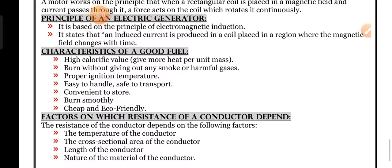Characteristics of a good fuel - what are the characteristics of good fuel they ask in your exam. First one: it has a high calorific value, gives more heat per unit mass. What do you mean by high calorific value? It gives more heat per unit mass, it's called calorific value. Second one: burn without giving out any smoke or harmful gases. What are the harmful gases? Carbon monoxide, carbon particles, sulfur dioxide, nitrogen oxides - these are all harmful gases. Proper ignition temperature.